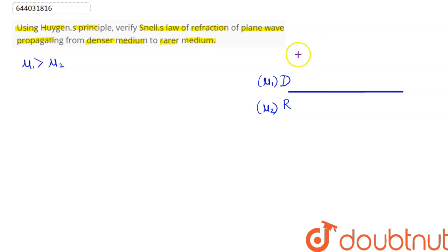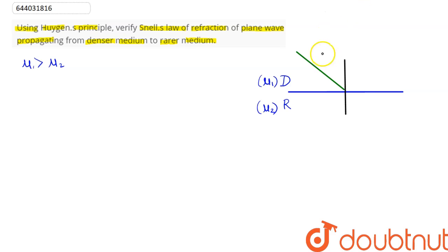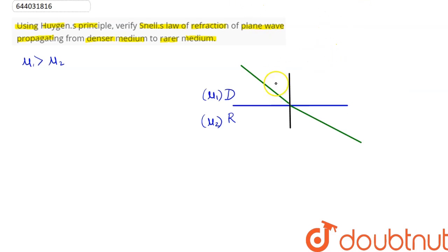We draw an incident ray, and perpendicular to this incident ray there is the incident wavefront. This is the normal, and with this normal the incident ray makes an angle of incidence i. As the ray goes from denser to rarer medium, it bends away from the normal. This angle here is the angle of refraction r.